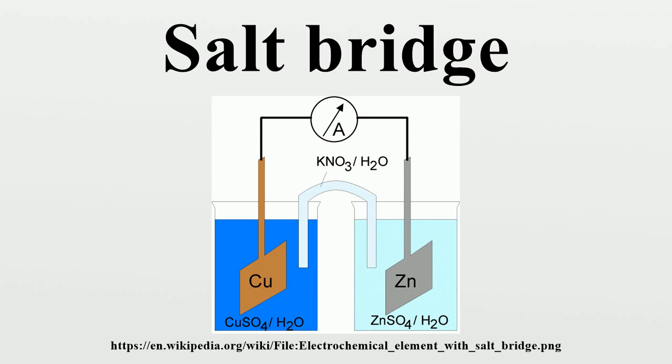Salt bridges usually come in two types, glass tube and filter paper. One type of salt bridge consists of a U-shaped glass tube filled with a relatively inert electrolyte, usually potassium chloride or sodium chloride.